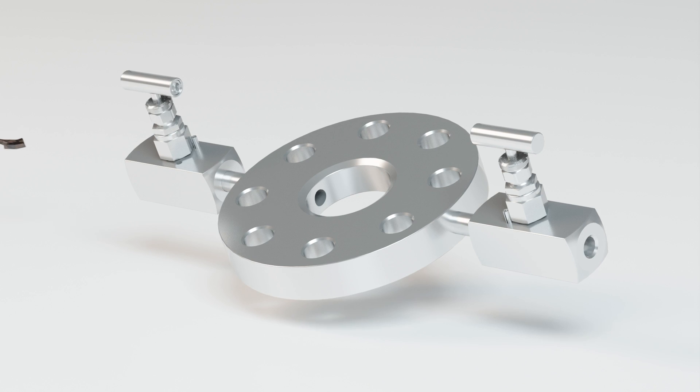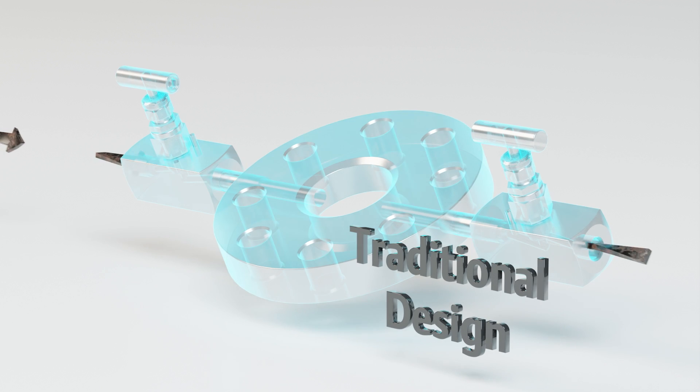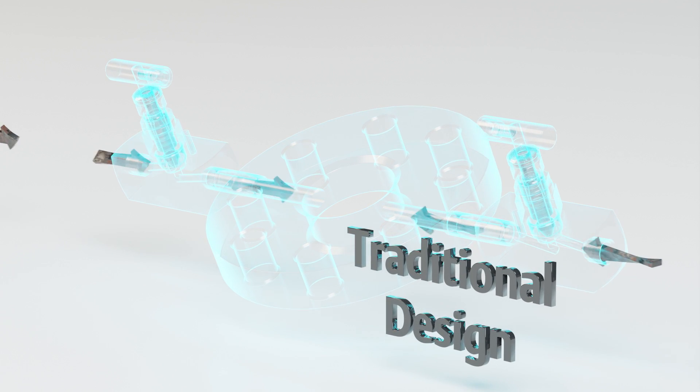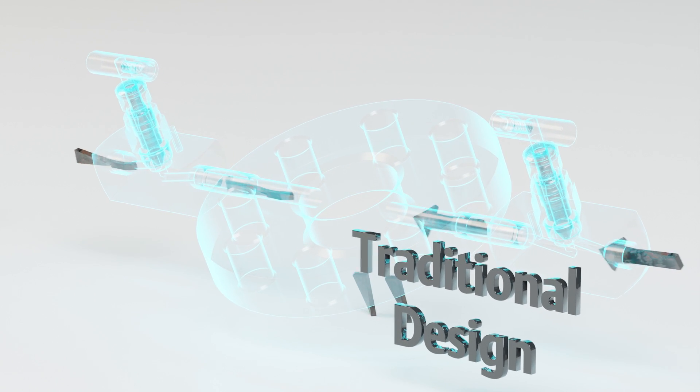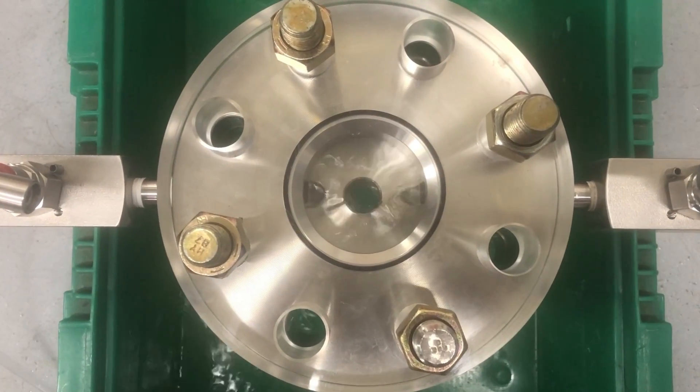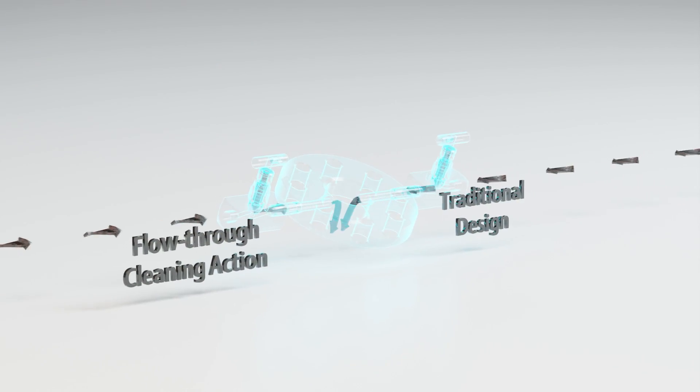The Rosemount 319 traditional design is available with your choice of ball valves, needle valves, or gate valves. Its design utilizes a flow-through cleaning action and can be assembled to fit most any application.